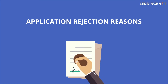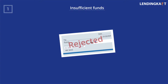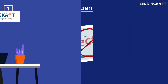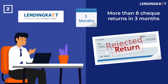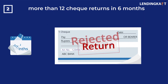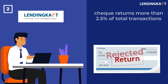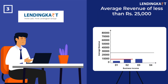Applications can be rejected on the following grounds: check returns or EMI bounces — more than 8 check returns in 3 months, more than 12 check returns in 6 months, or more than 18 check returns in 12 months. Check returns more than 2.5 percent of total transactions, or average revenue of less than rupees 25,000 of business income in the last three months.